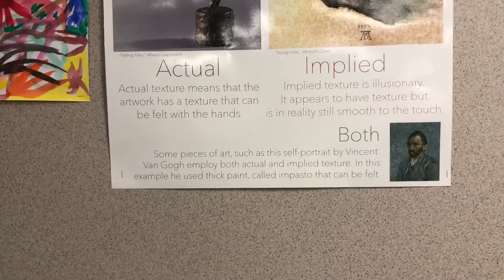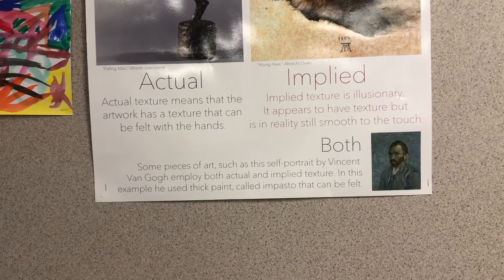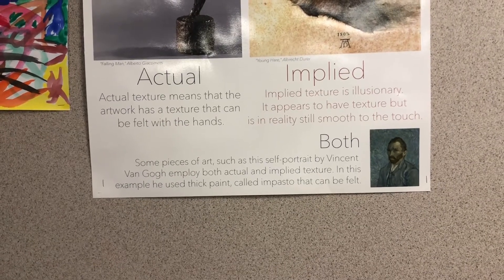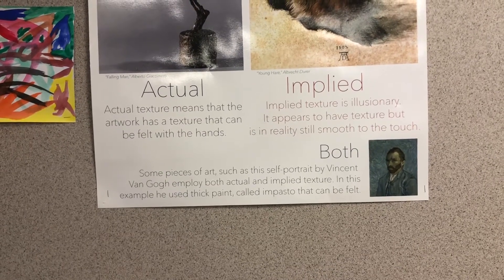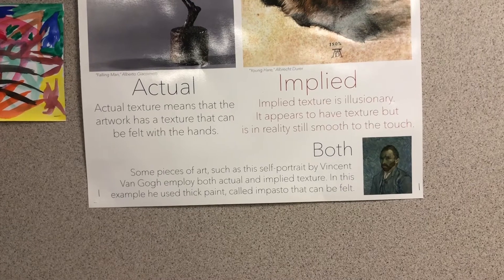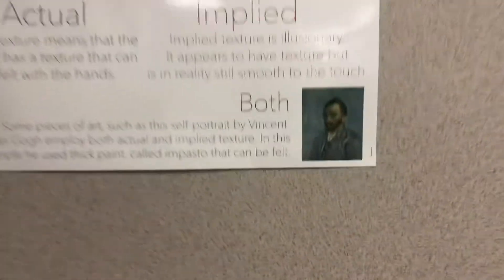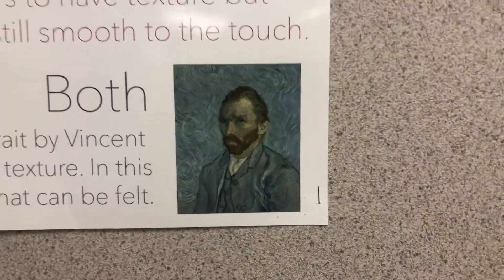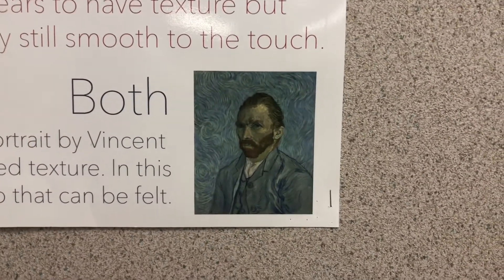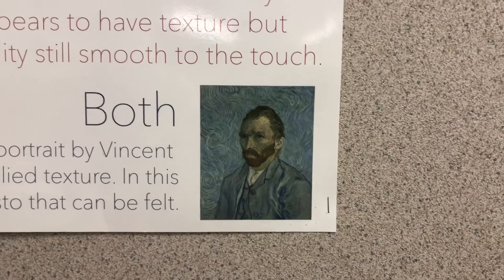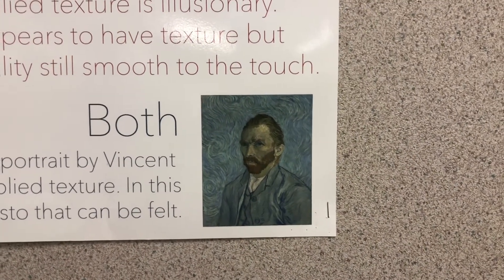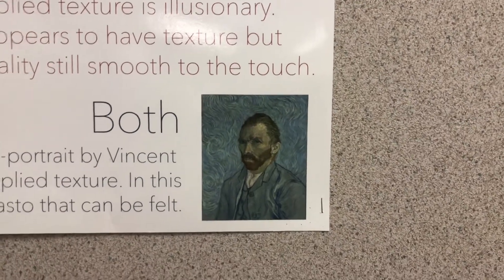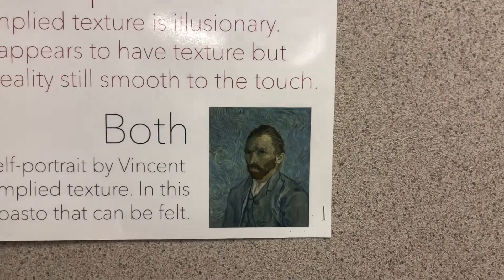Some pieces of art, such as this self-portrait by Vincent van Gogh, have both actual and implied texture. In this example he used thick paint called impasto that can be felt. When he painted this picture of himself, his paint was so thick it was like toothpaste — he squeezed it out of the tube and painted it, so it actually dried hard and bumpy. And then he has implied texture because it looks like his hair is slick and smooth back. So he has both implied and actual texture.